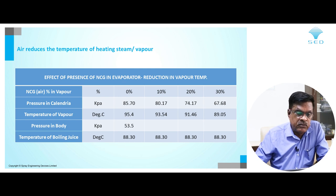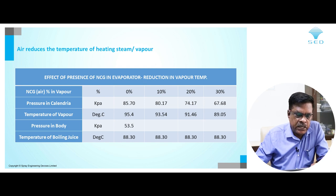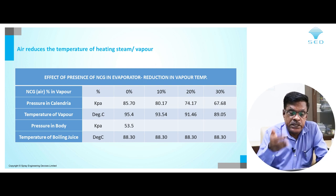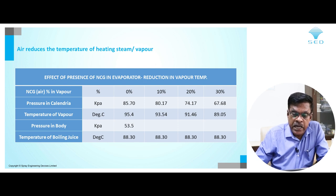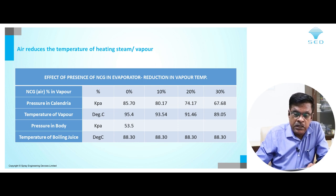We have tabulated these effects. When NCG is zero, you have your calendria pressure at rated steam pressure and a corresponding body temperature — finding 53.5 kPa and temperature 88.3°C. At 10 percent NCG, the pressure comes to 80 kPa, the temperature drops by about 1.2 degrees. At 20 percent it drops to 74 kPa and temperature comes to 91°C. At 30 percent it comes to 67 kPa and the vapor temperature is 89°C.